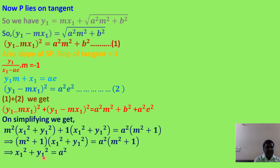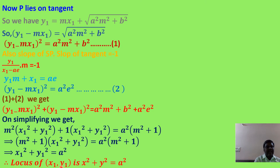Cancelling (m² + 1) from both sides — which is valid since m² + 1 is never zero — gives x₁² + y₁² = a². Therefore the locus of (x₁, y₁) is x² + y² = a², which is the auxiliary circle of the ellipse. Hence the locus of the foot of perpendicular drawn from the focus to any tangent is its auxiliary circle.